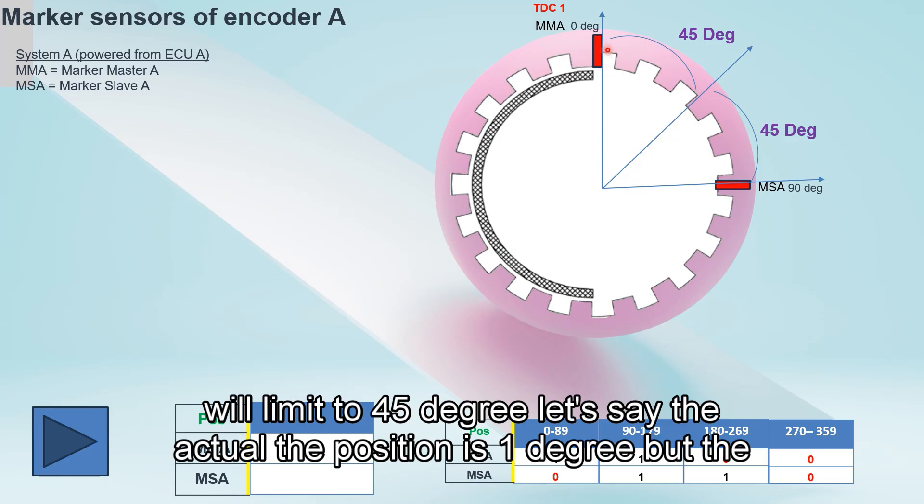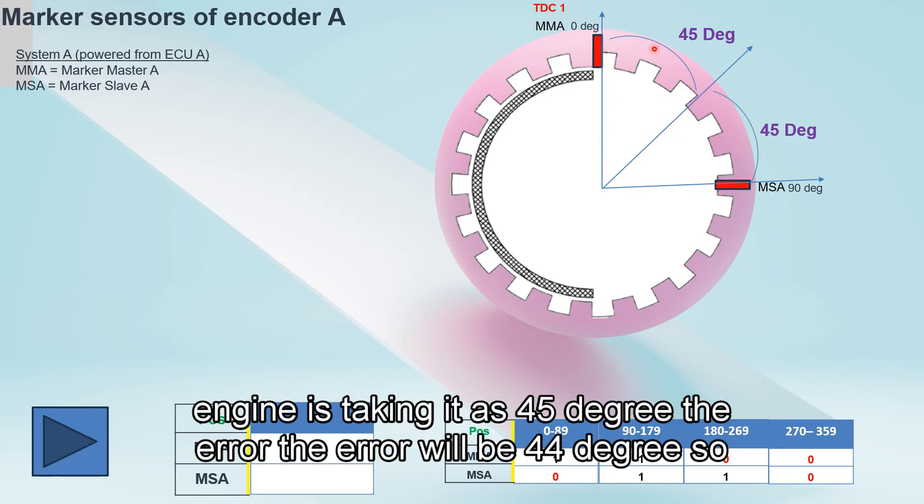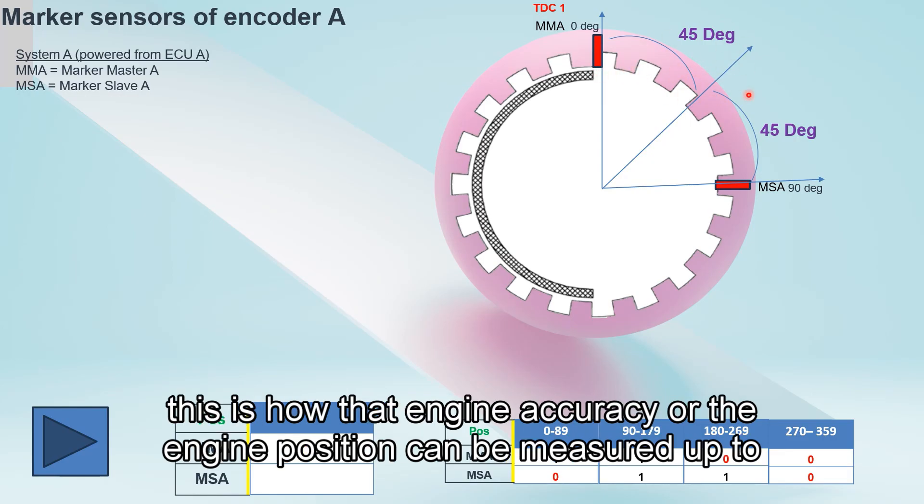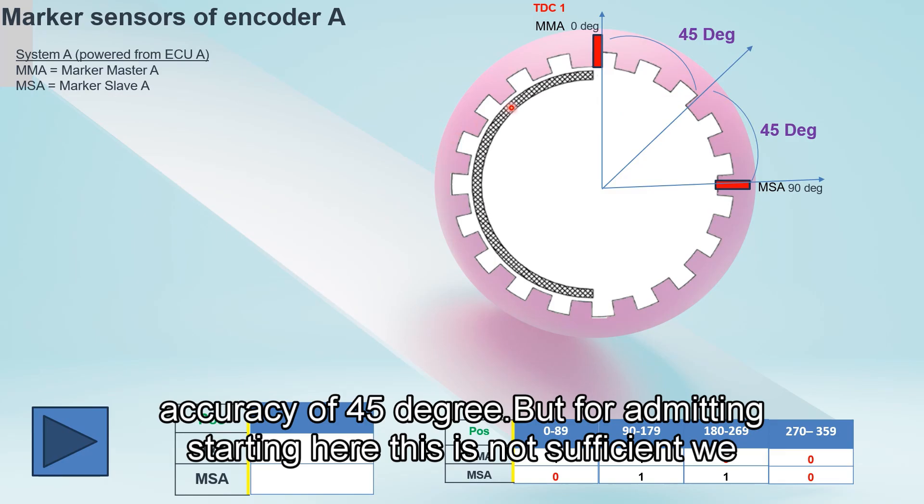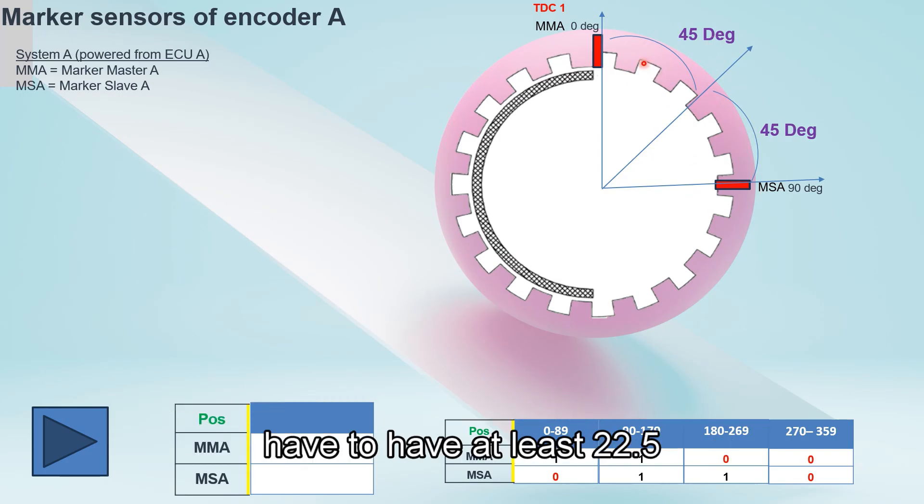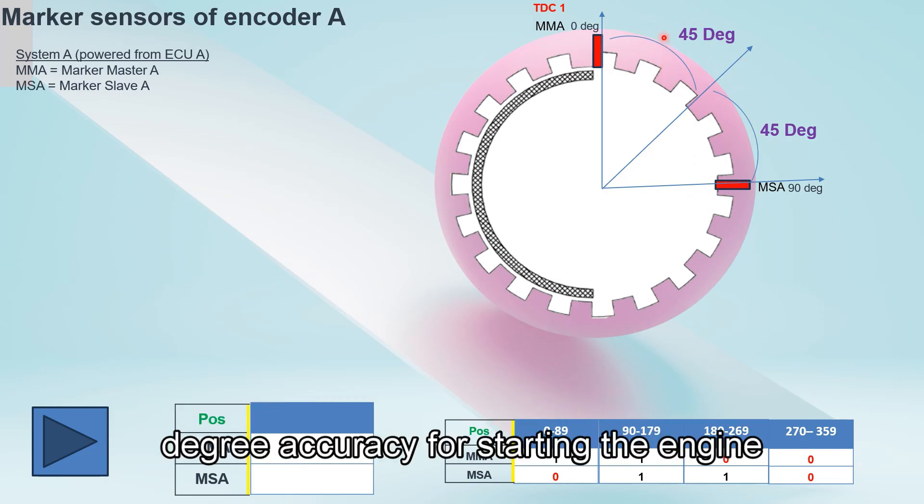Let's say the actual position is 1 degree, but the engine is taking it as 45 degrees. The error will be 44 degrees. This is how the engine position can be measured to accuracy of 45 degrees, but for admitting starting air, this is not sufficient. We have to have at least 22.5 degree accuracy for starting the engine.